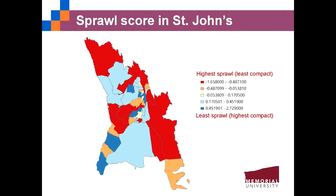Here we show the sprawl score for some cities or regions in Canada. Areas in red are the most sprawled or least compact, and areas in dark blue are the least sprawled or most compact. The first example is St. John's in Newfoundland. The most sprawled areas are located in the peripheral areas, and the most compact areas are located in downtown St. John's and central Mount Pearl. This makes sense in reality.